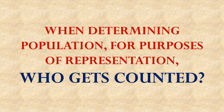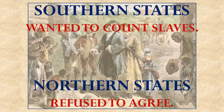The next big compromise came once representation was decided: how do you count who's going to be represented? The issue was about slavery. Southern states wanted to count their slaves as part of their population, so they would get more representatives. Northern states thought this was a horrible idea — if the Southern states were going to treat their slaves as property, then slaves should be counted as property rather than people in determining how many representatives a state would get in the House of Representatives.